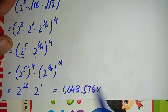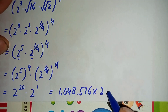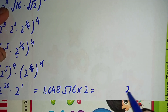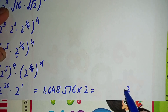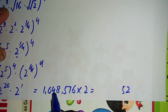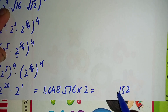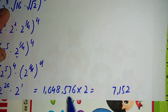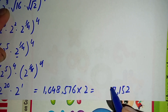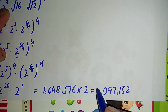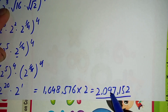Next we will simplify this multiplication. Two raised to power 20 is equal to 1,048,576, times 2. Now the multiplication of these two numbers: 6 times 2 is 12, carry 1; 7 times 2 is 14 plus 1 is 15, carry 1; 5 times 2 is 10 plus 1 is 11, carry 1; 8 times 2 is 16 plus 1 is 17, carry 1; 4 times 2 is 8 plus 1 is 9; 2 times 0 is 0; 2 times 1 is 2. So finally 2,097,152 is the answer.